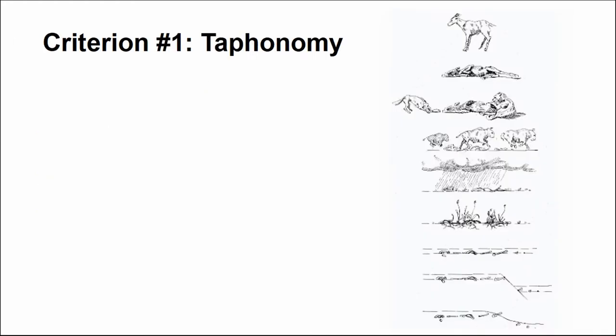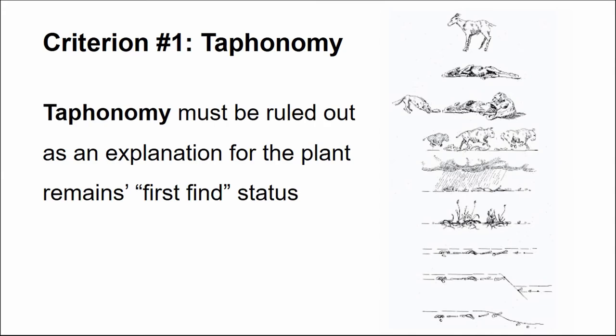Criteria number one: taphonomy. Taphonomy must be ruled out as an explanation for the plant remain's first find status. Taphonomy refers to the processes an organism undergoes after its death. If we had a case of unique preservation producing our first find, we would question whether it's due to unique preservation or an actual new introduction. To overcome that, finding other examples of the species in later contexts under normal conditions would help, as would finding close taxonomic relatives in earlier assemblages.